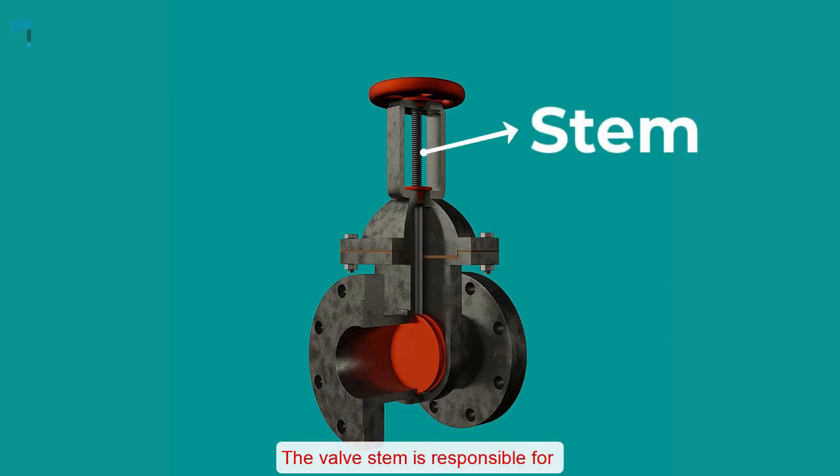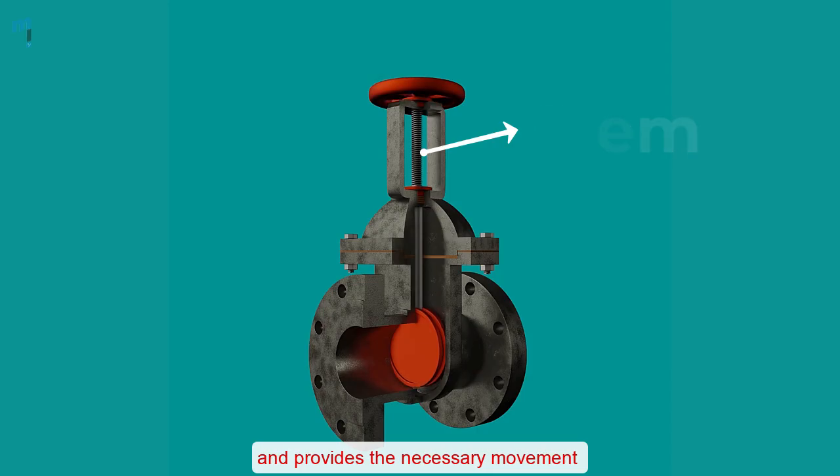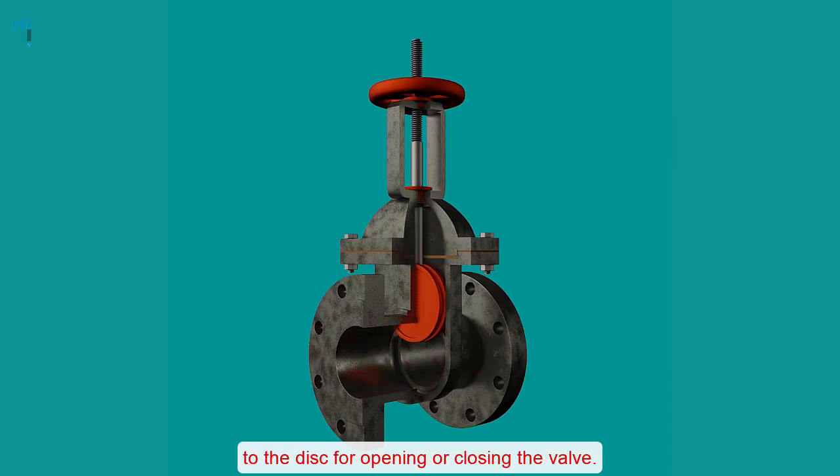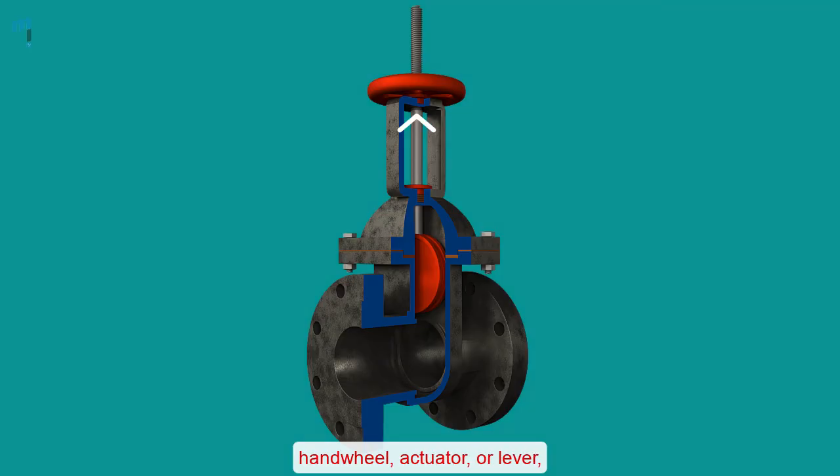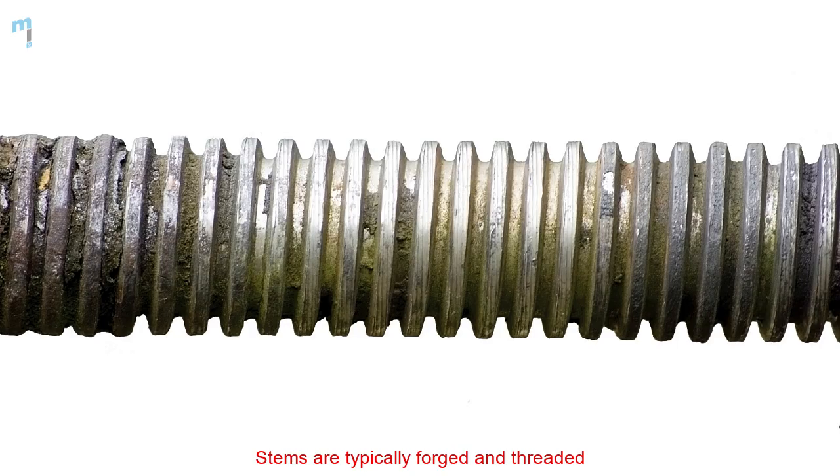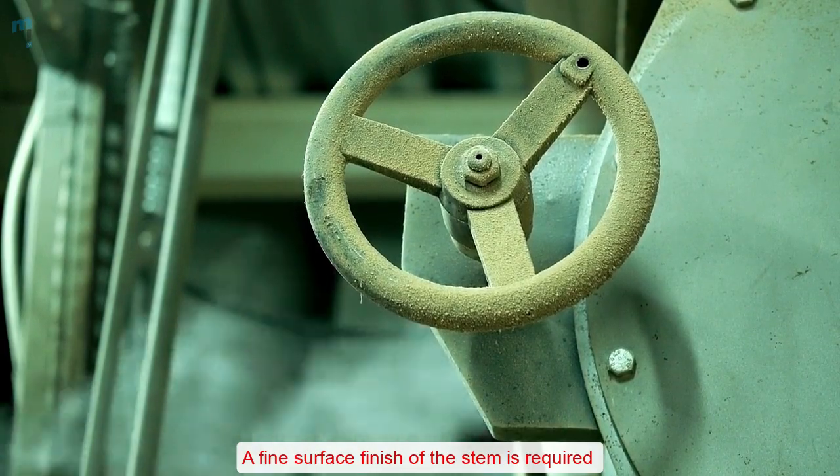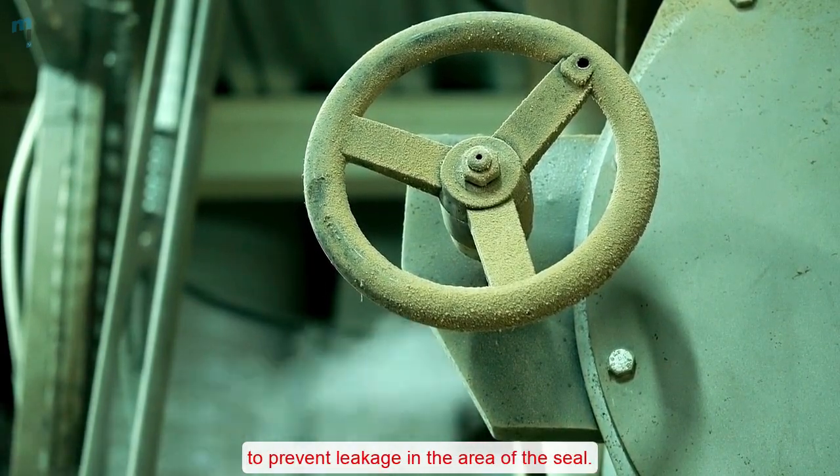Stem: The valve stem is responsible for the proper positioning of the disc and provides the necessary movement to the disc for opening or closing the valve. On one end it is connected to the valve hand wheel, actuator or lever and on the other end it is connected to the valve disc. Stems are typically forged and threaded or otherwise connected to the disc. A fine surface finish of the stem is required to prevent leakage in the area of the seal.